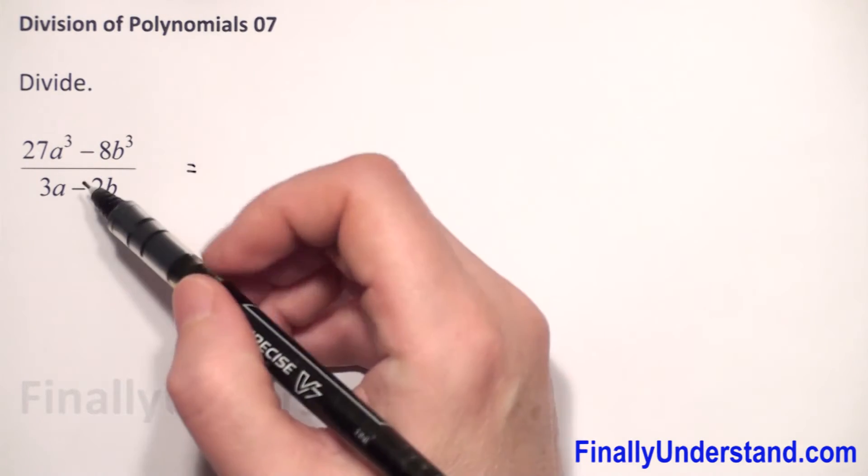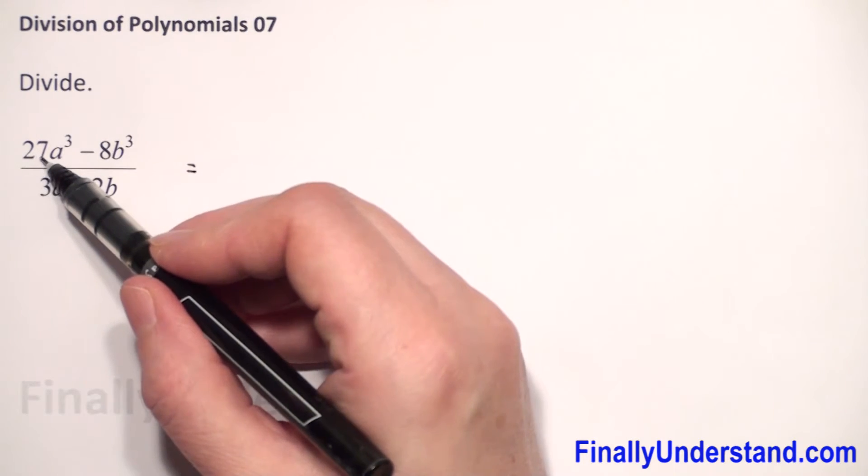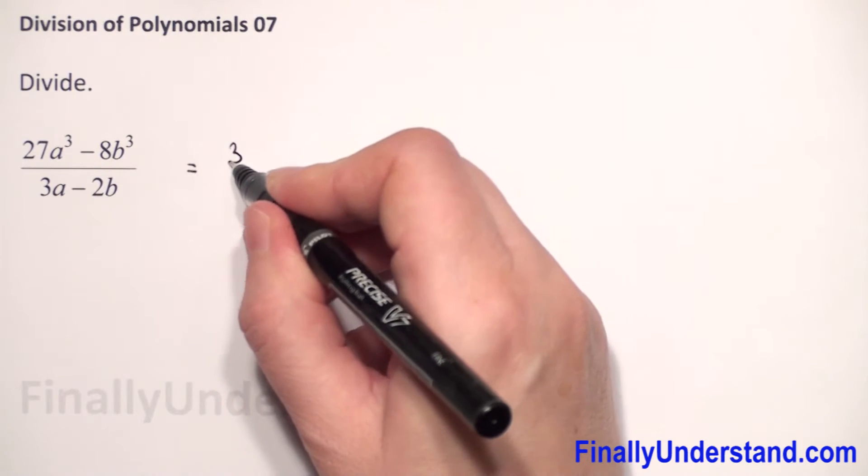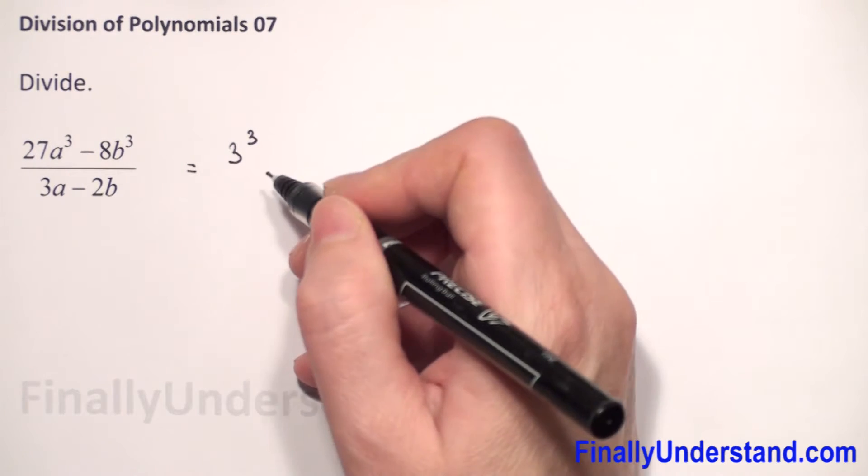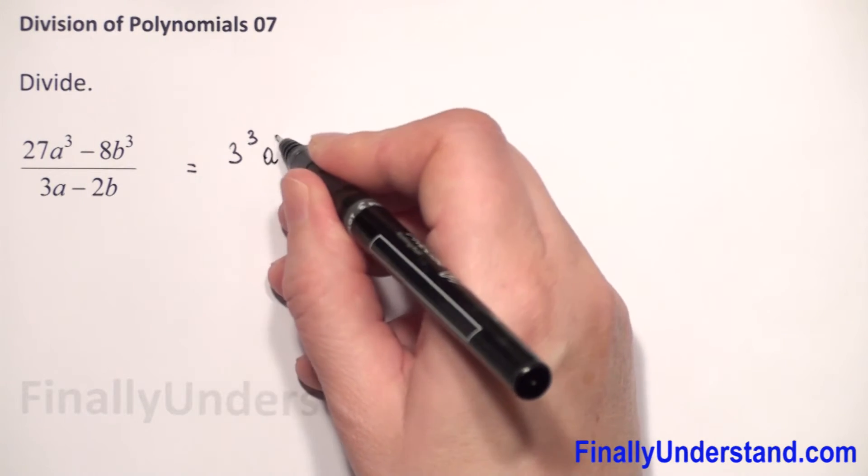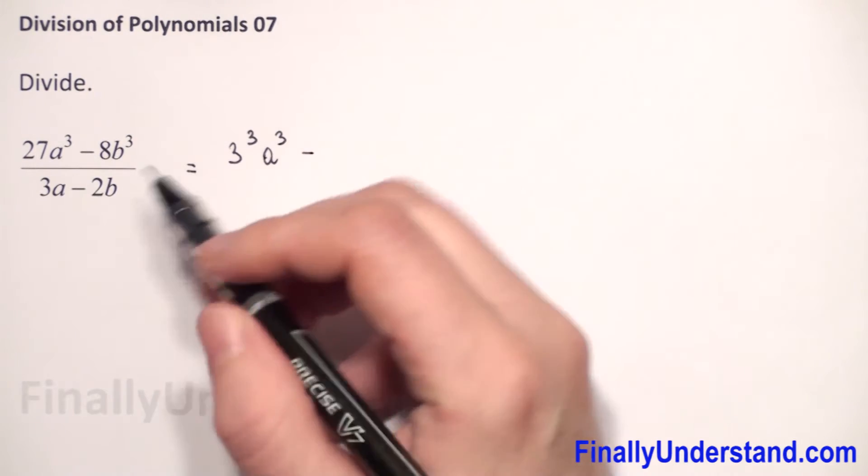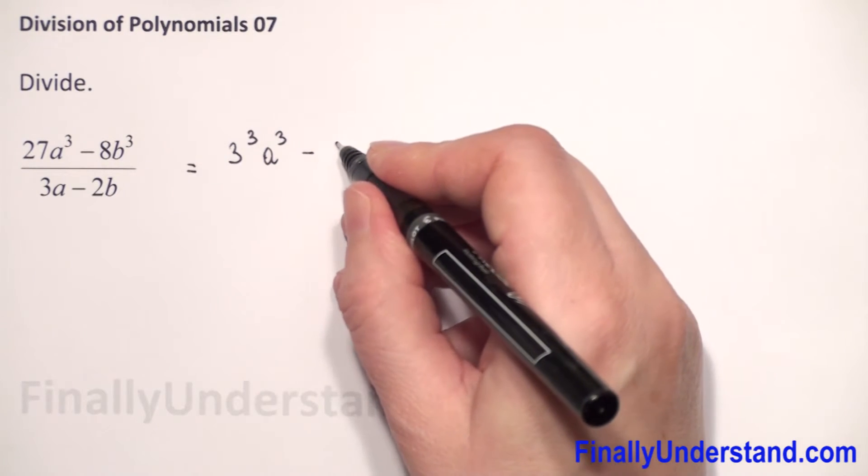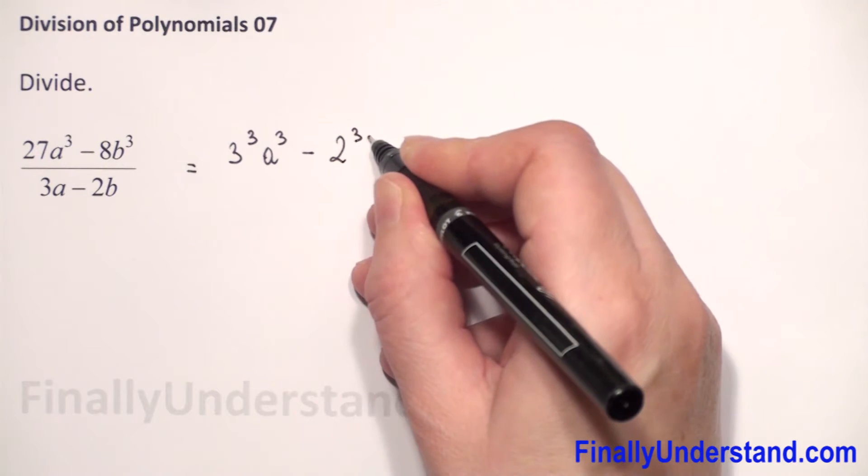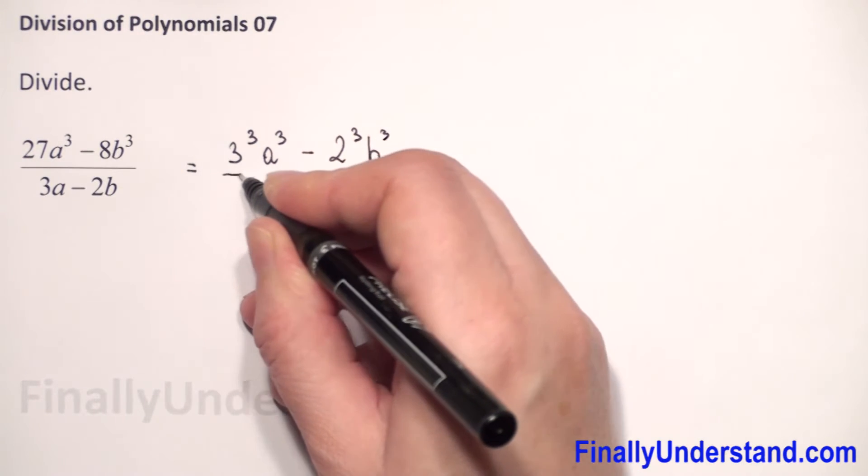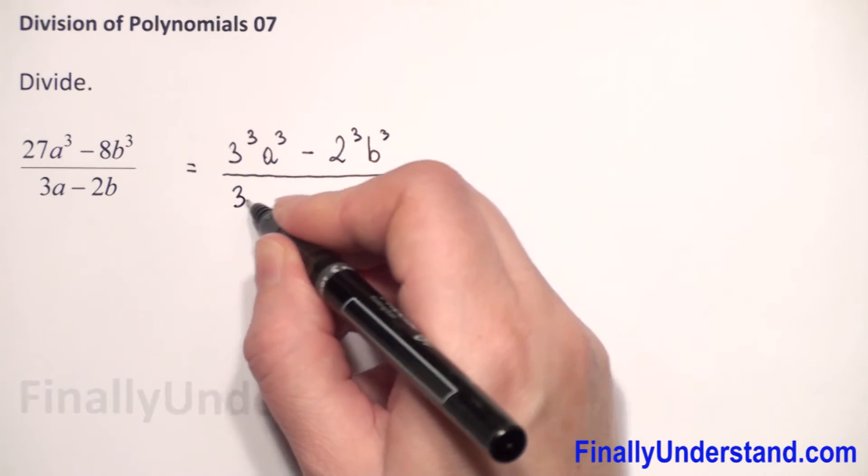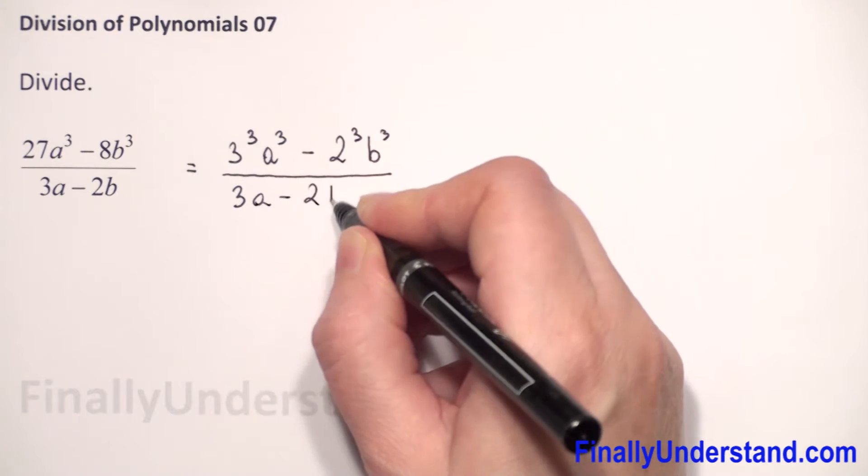So we can rewrite our numerator. 27, I can write that this is 3 to 3rd power and we have a to 3rd power minus 8. I can rewrite that this is 2 to 3rd power, b³, we copy over and we have 3a minus 2b.